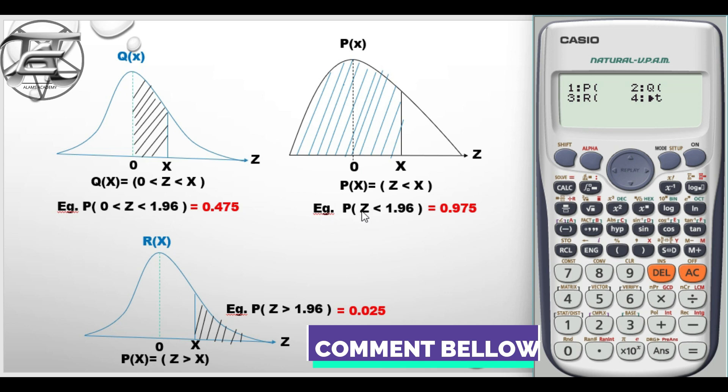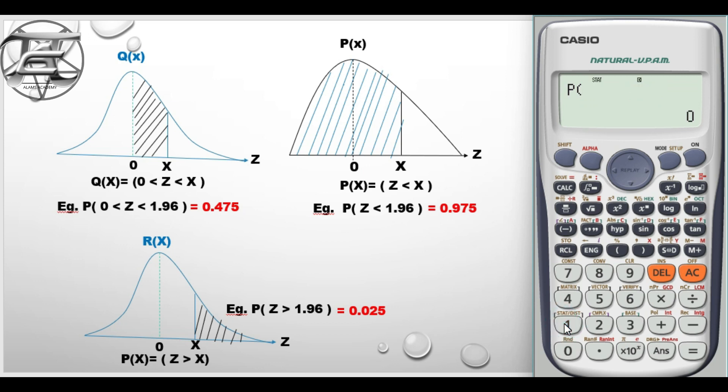Example, if you have been given probability of z less than 1.96, we are going to use the first equation to solve it. So I put one, now I type in the figure, so 1.96, then you hit the equal sign and our answer here is 0.975.